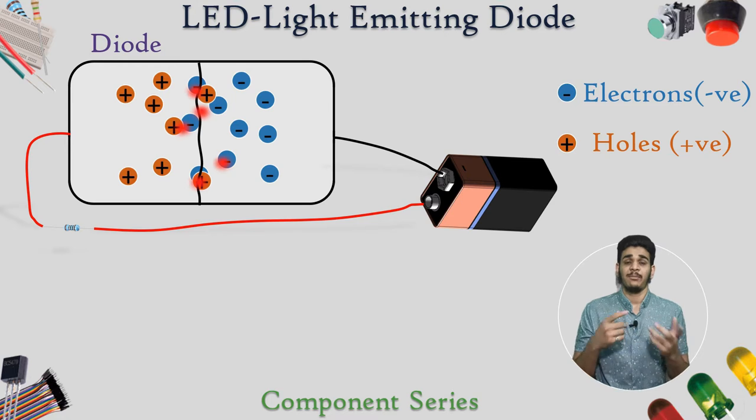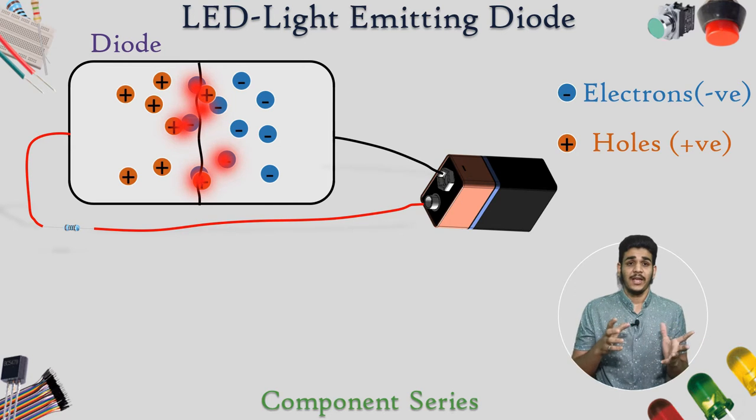So during this process, the light is emitted which we can see as the light coming out from the LED.